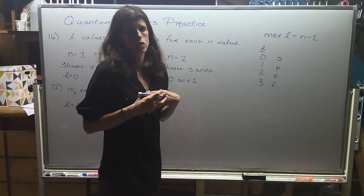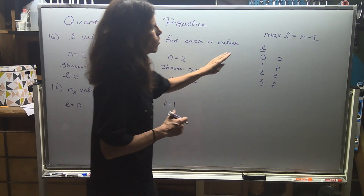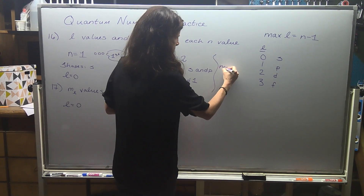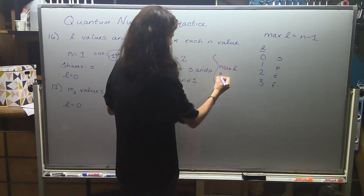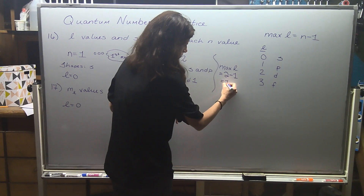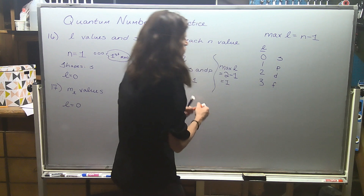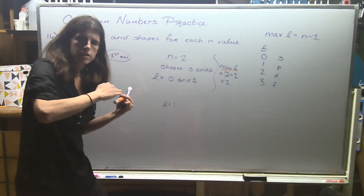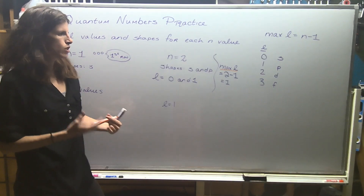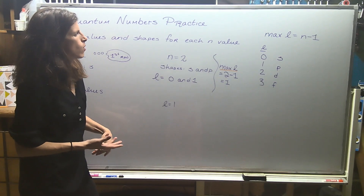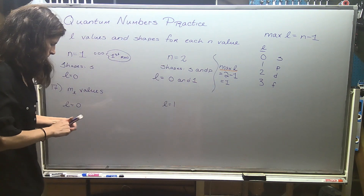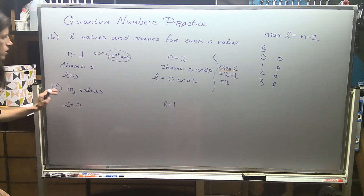Just in case electron configurations aren't your preference: max l equals n, which is 2, minus 1 equals 1. This is your max l, so everything below that is also allowed. We talk about allowable sets of numbers a lot with quantum numbers — that's why we have zero, but 1 is the maximum value if you're using that formula.